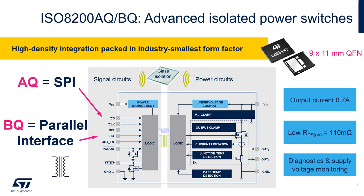Inductive loads can be safely switched off without any external freewheeling diodes by means of the integrated demagnetization circuit. ISO 8200 has a common diagnostic pin indicating overtemperature, and the AQ version offers additional per-channel diagnostic information and power supply monitoring. The power stage is fully protected against overload or short circuit, and heating of the IC is limited using a two-level thermal shutdown protection.